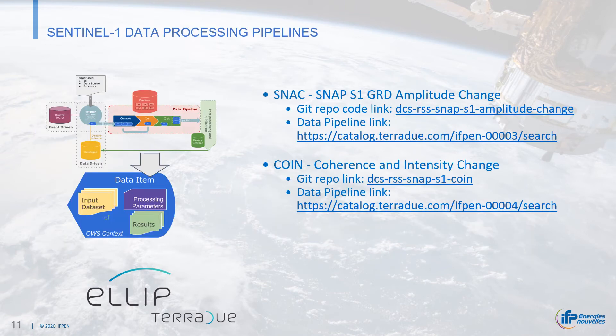In this process, an automated data processing chain was set up and operated to generate data products over selected sites. This included Sentinel-1 ground range detected change products, and Sentinel-1 coherence and intensity change products, both based on the SNAP toolbox and deployed on cloud computing resources to feed the Sen4H2 product database.